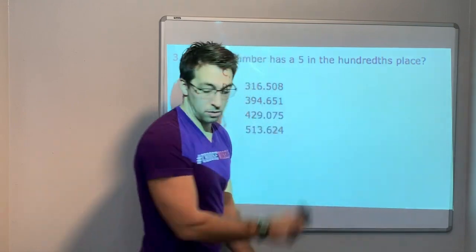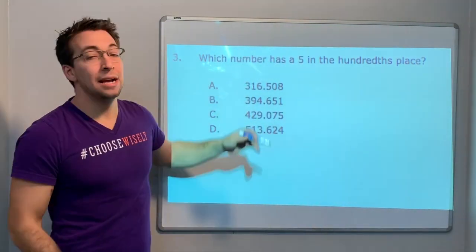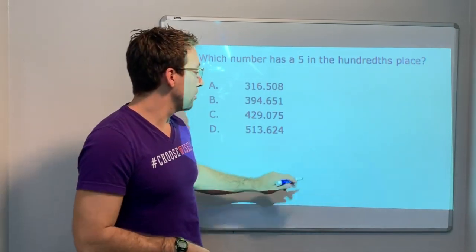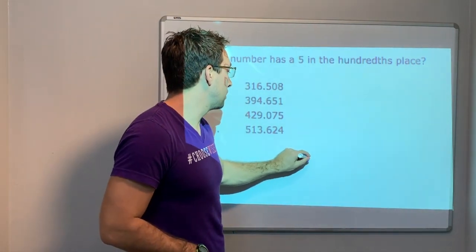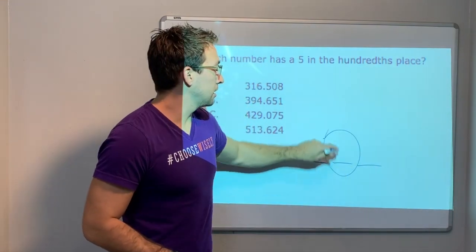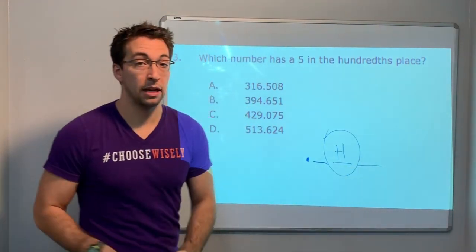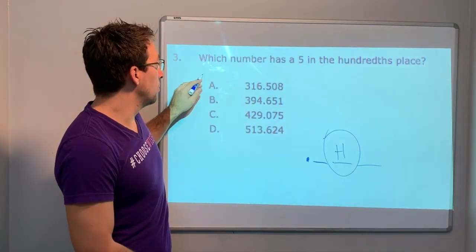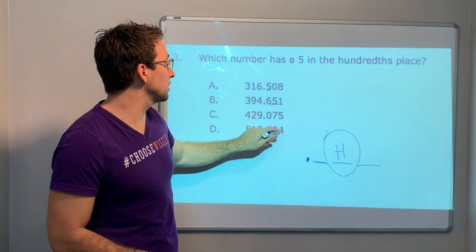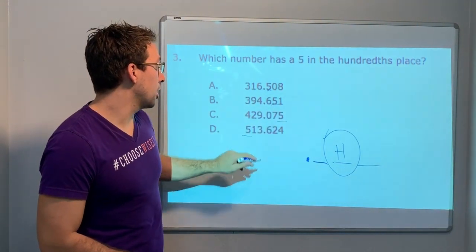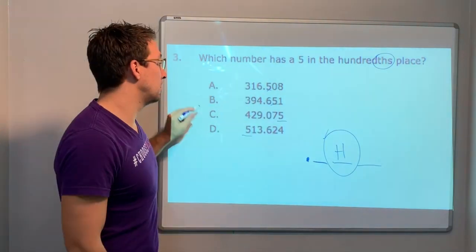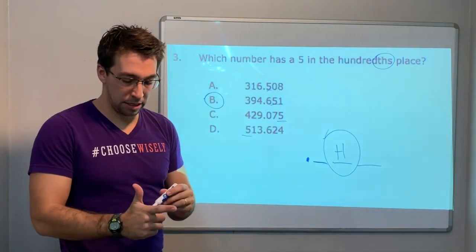Which number has a 5 in the hundredths place? Remember, here's our decimal: tenths, hundredths, thousandths. This is the hundredths - H for hundredths. In 316.5, the 5 is in the tenths place. Hundredths, thousandths, and hundredths place - notice the THS is the decimal. B is our answer.